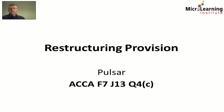Specifically we're looking at part C of that question, where we're told that at a board meeting, Pulsar's directors made a decision to close down one of its factories on the 31st of March X3. The factory and its related plant would then be sold. We're also told that the closure of the factory does not meet the criteria of a discontinued operation under IFRS 5.